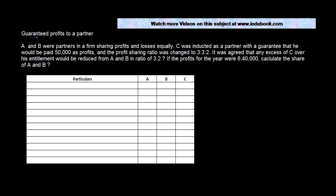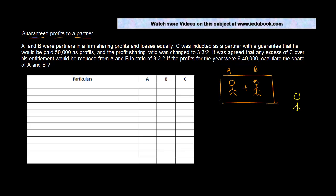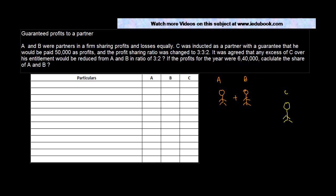Let us see how to do the accounting in case there are certain guaranteed profits to a partner. For example, there were two partners A and B running their business well, but they realized they needed a good marketing person as a manager. There was this person C who was very good at marketing, so they asked C to become a partner. C agreed, on the condition that they would guarantee a particular minimum amount, and if not met, A and B would bear it out of their own pocket.